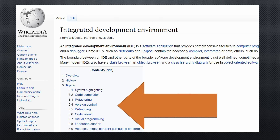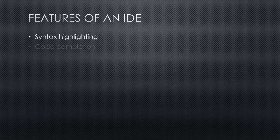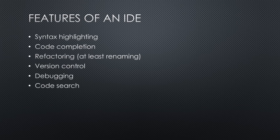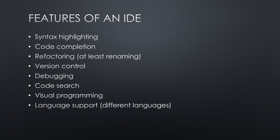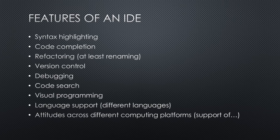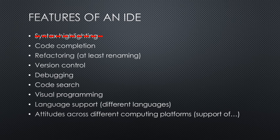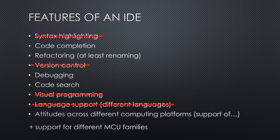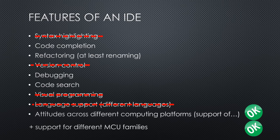According to Wikipedia, an IDE should support syntax highlighting, code completion, refactoring, version control, debugging, code search, visual programming, language support, and portability across different computing platforms. I would prioritize the list and remove syntax highlighting, visual programming and language support from priority 1. Version control is also not too crucial for makers because most of us do not work in teams. But I would add the support for different MCU families like ATmega, Espressif or ARM. This list is not very long and the current IDE already fulfills some points — it runs on several platforms and supports different MCU families, for example.